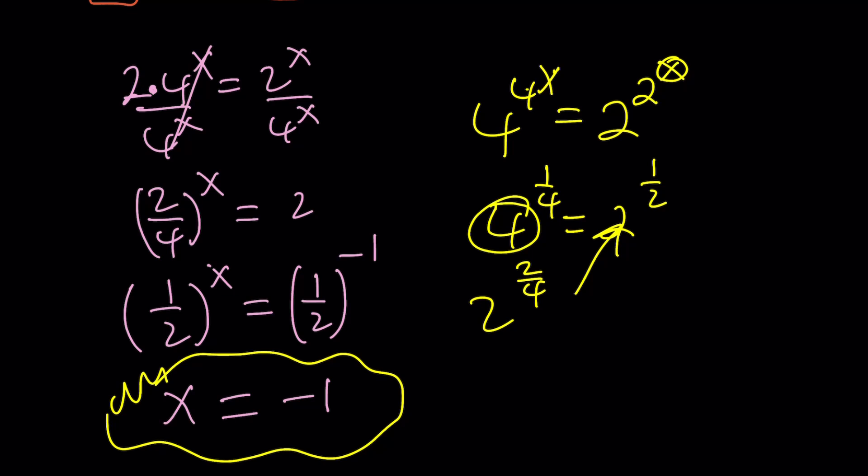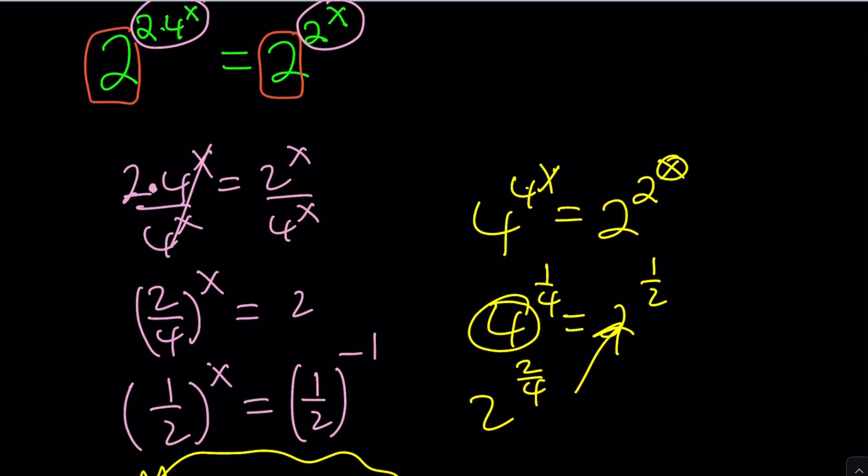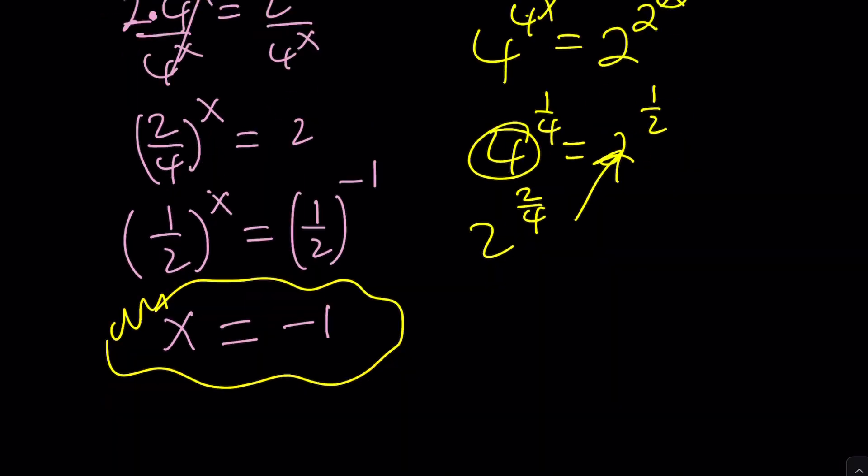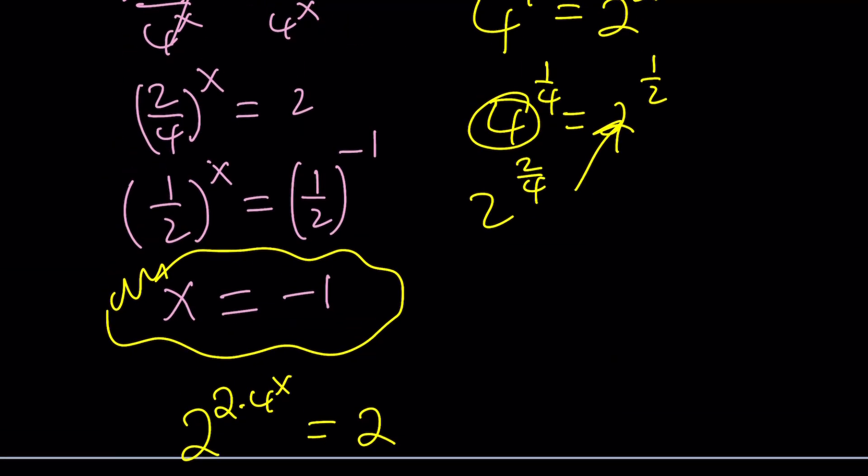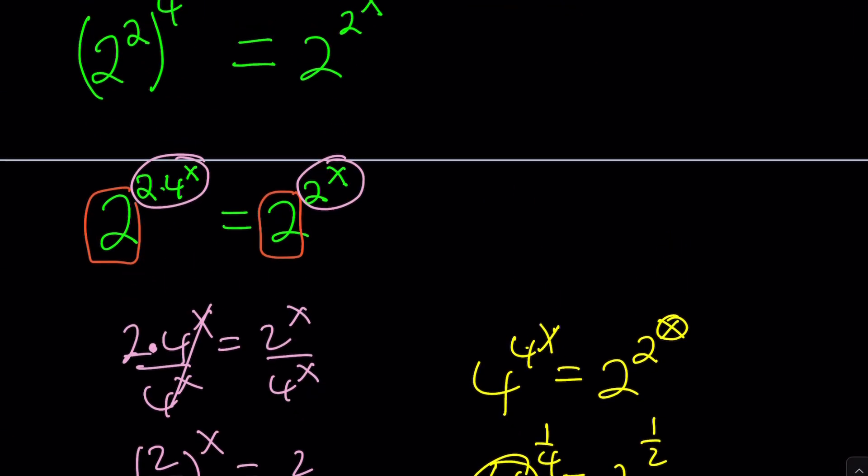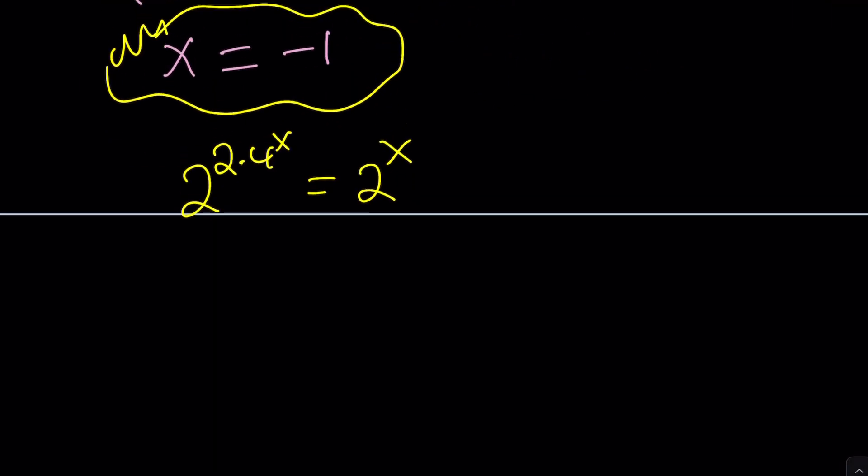Let's see how we can find complex solutions. Are there any complex solutions, first of all? We got 2 to the power 2 times 4 to the x equals 2 to the x. Now let's see how we can go to complex solutions from here.